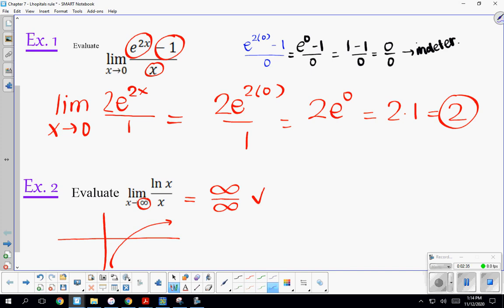Let's go ahead and take the derivative of the top and the bottom and try direct substitution again. The derivative of natural log of x is 1 over x. Derivative of x is 1. Now if we try direct substitution, we get 1 over infinity.